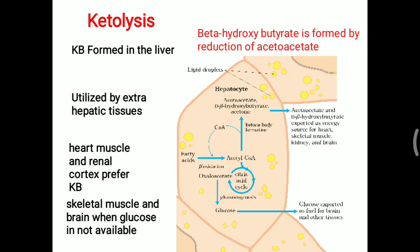Beta-hydroxybutyrate is formed by the reduction of acetoacetate. Acetoacetate is the primary ketone body, and from it, the secondary ketone body beta-hydroxybutyrate is generated.